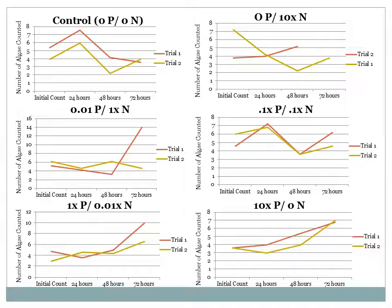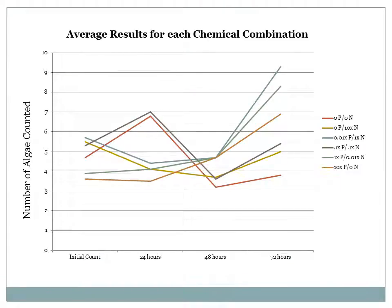These first graphs show the growth of the algae in each dish over the duration of the four counts. I averaged the values from the trials to create this single graph. You can see that while the control, which has no phosphorus and no nitrogen added, began the experiment with algae counts in the middle of the data, by the end of the experiment it had lower counts of algae than all the petri dishes with fertilizer added. This suggests that the fertilizer, including both nitrogen and phosphorus, led to increased algae growth.